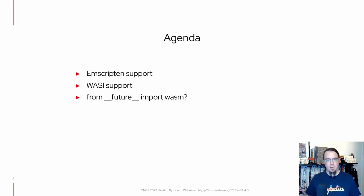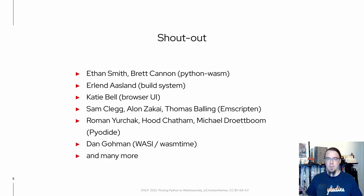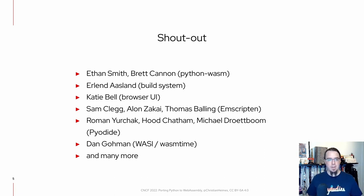This talk is divided in three chapters. In the first chapter, I'm going to talk about Emscripten support, followed by how WebAssembly System Interface support was implemented, and finally some words on how I think the future for Python and WebAssembly will look like and some of the problems we are still facing. A big shout-out to lots of people who helped contribute to this effort, including several core developers, people from the Emscripten community, the Pyodide team, and people from the Bytecode Alliance who helped with the WASM time problems.